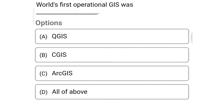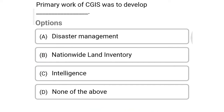Next question: Where was the first operational GIS? Option A: QGIS, Option B: CGIS, Option C: ArcGIS, Option D: all of the above. So the correct answer is Option B, CGIS.